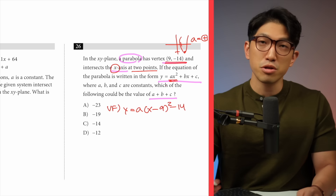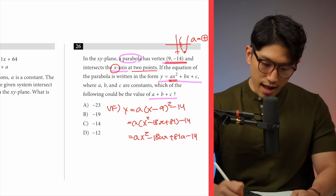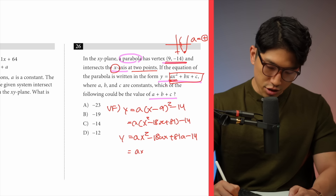From here, we're going to expand out the vertex form, which gives us a(x minus 9) squared minus 14, expanding to ax squared minus 18ax plus 81a minus 14. And that is the equation of the parabola, which can also be rewritten in the form ax squared plus bx plus c.